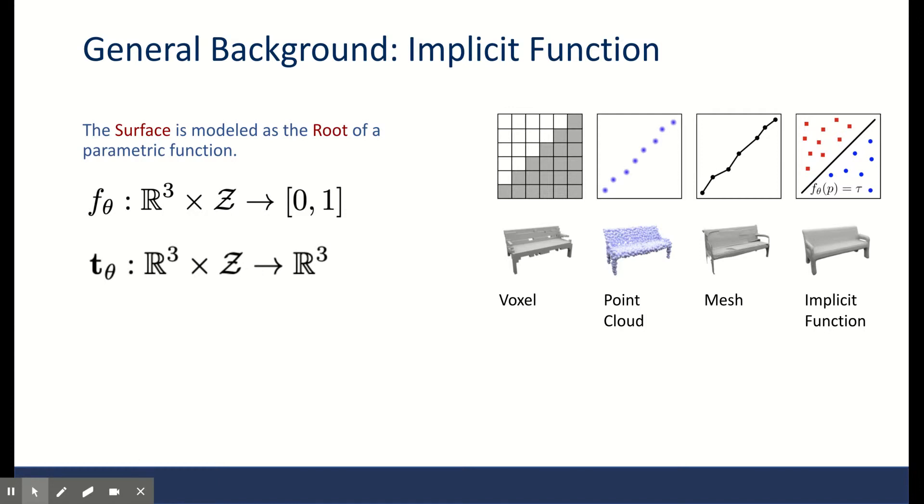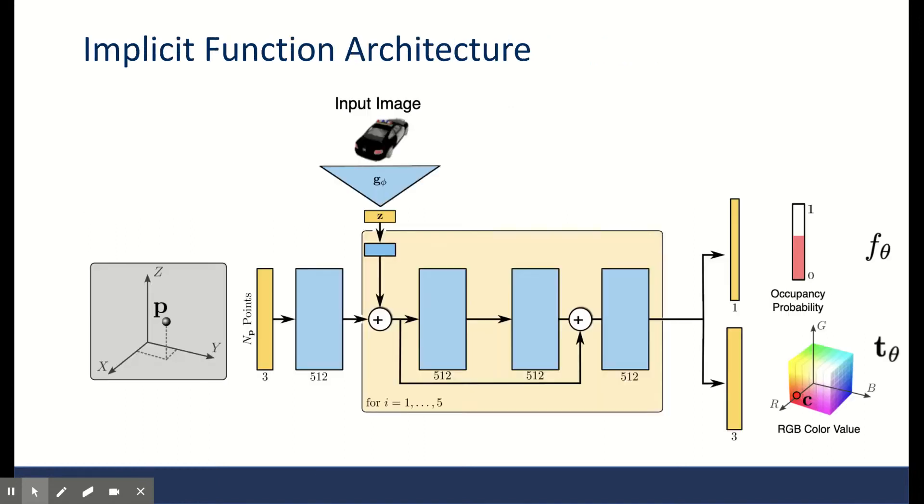In this line of work, we assume a threshold tau for the surface. For points that are on the surface, F_theta of p is equal to tau. Therefore, finding the surface resolves into finding the root of a parametric equation. In this work, they use an architecture with residual blocks to parameterize F.